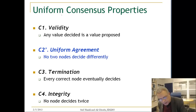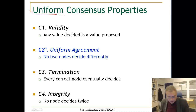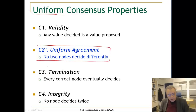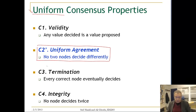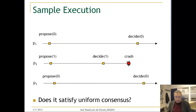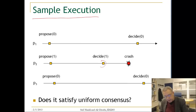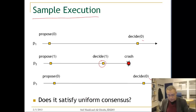The version we are also interested in is uniform consensus, which is more practical. The only difference is that now we have uniform agreement: no two nodes — correct or not — can decide differently. All nodes must decide on the same value. In the example shown, there is a node that decides differently from the other two nodes, and therefore this execution does not satisfy uniform consensus.